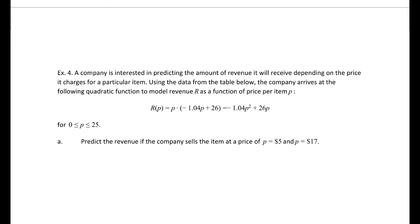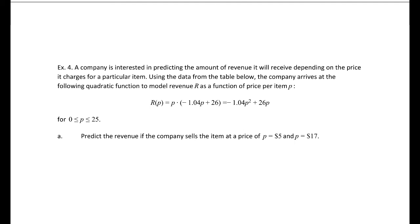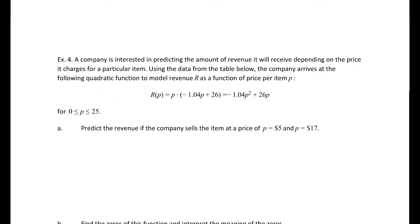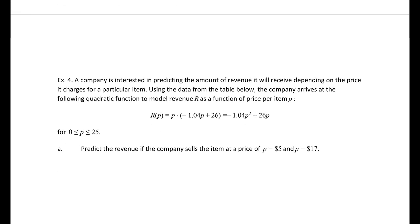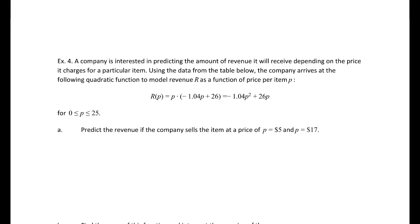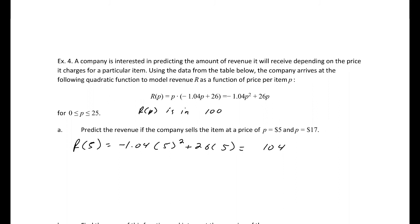Example 4. A company wants to predict revenue as a function of price using the quadratic model R(P) for P between 0 and 25 (from the OpenStax Calculus Volume 1 textbook). To predict revenue at a price of $5, we evaluate R(5), which gives a total revenue of $104,000 (since R is in thousands of dollars).